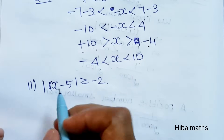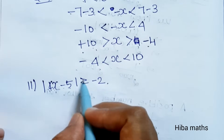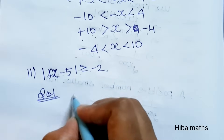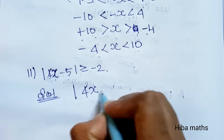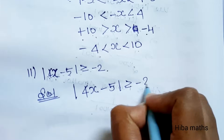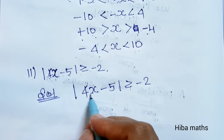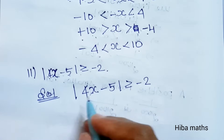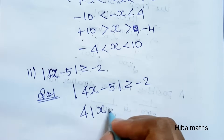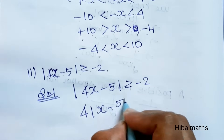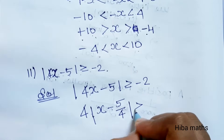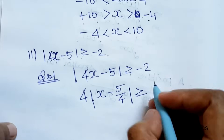Subdivision 2: Modulus of 4x minus 5 is greater than or equal to minus 2. Solution: since modulus is always non-negative and minus 2 is negative, this is always true. We write 4x minus 5, multiply by 4, divide by 4, which is greater than or equal to minus 2.